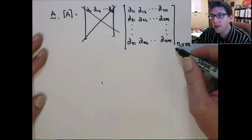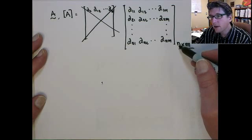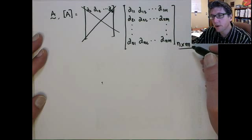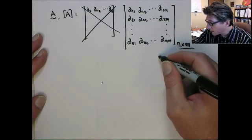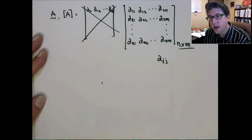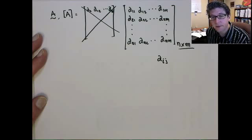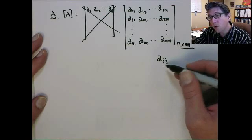So sometimes we'll denote the dimension of the matrix down here below. So n, the first number is the number of rows, and then the second number is the number of columns, so an n by m matrix. And you can see if we have an entry a_ij, this is the entry that goes into the i-th row, j-th column.